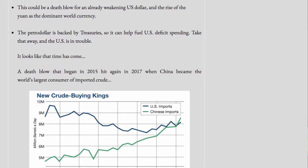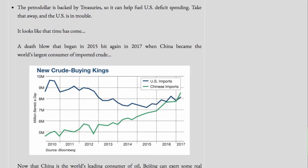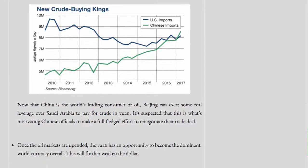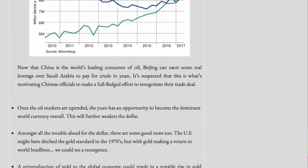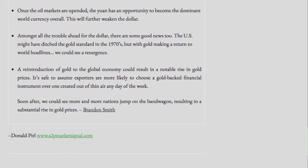The petrodollar is backed by treasuries, so it can help fuel U.S. deficit spending — take that away and the U.S. is in trouble. A death blow that began in 2015 hit again in 2017 when China became the world's largest consumer of imported crude. Now that China is the world's leading consumer of oil, Beijing can exert real leverage over Saudi Arabia to pay for crude in yuan, motivating Chinese officials to make a full-fledged effort to renegotiate their trade deal. Once the oil markets are upended, the yuan has an opportunity to become the dominant world currency overall.